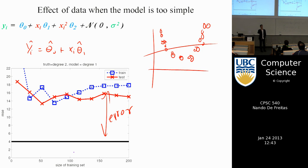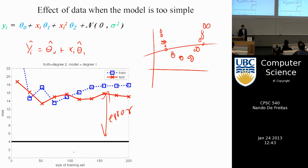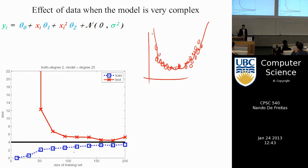If you wanted to decrease that test error, you'd have to change to a nonlinear model. For an extra 1% toward the final mark, whoever submits a good nonlinear model using RBFs or polynomials will receive that. But in reality, when we model data, we don't know whether our model will be too simple or whether we have the right model — we have uncertainty over models.